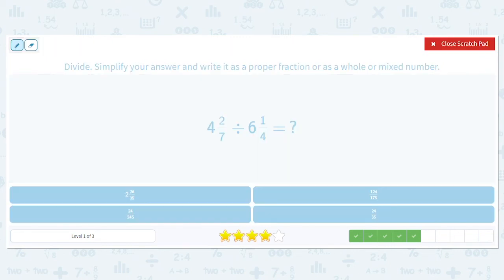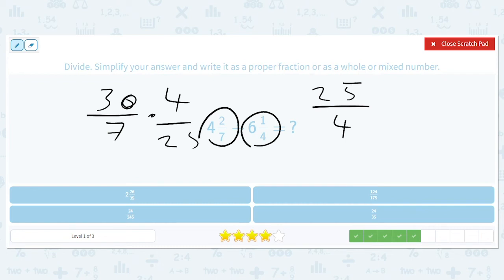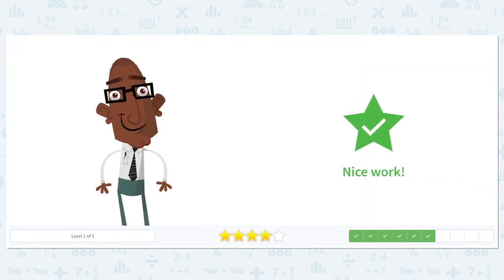Okay, how about this? So we'll do 37 sixths, and we'll do divided by 6 and 1 fourth. So that's 25 fourths. So times 4 over 25. Let's divide this by 5 and this by 5, so that'll be 6 and that will be 5. So we'll get 24 over 35. Not a bad one.